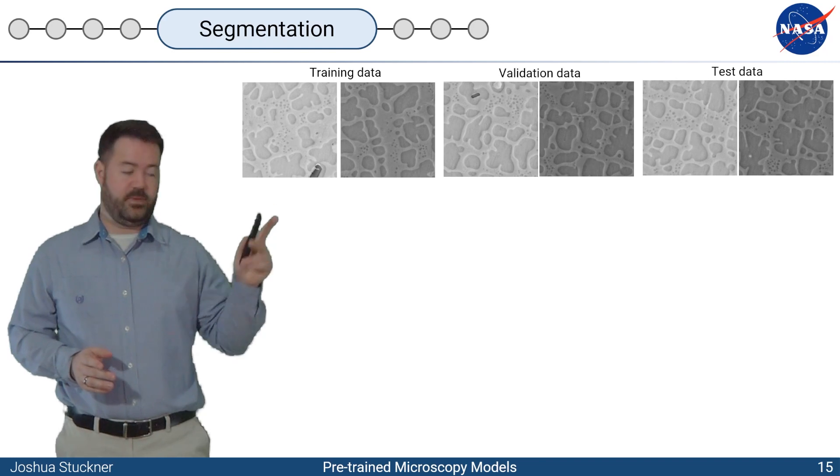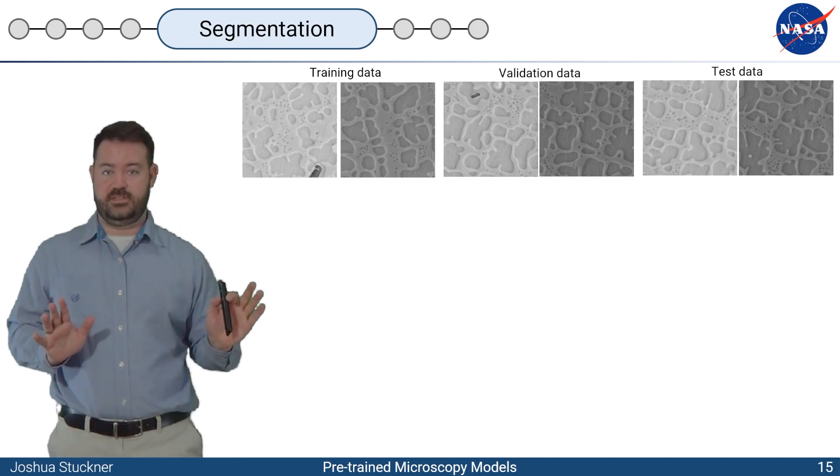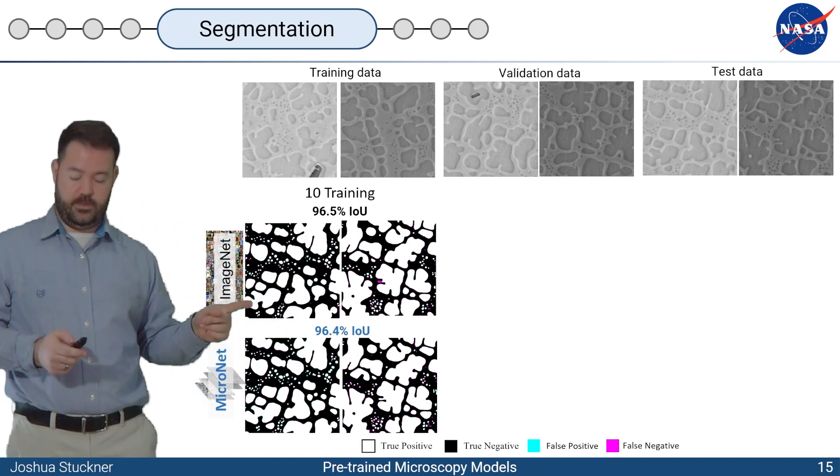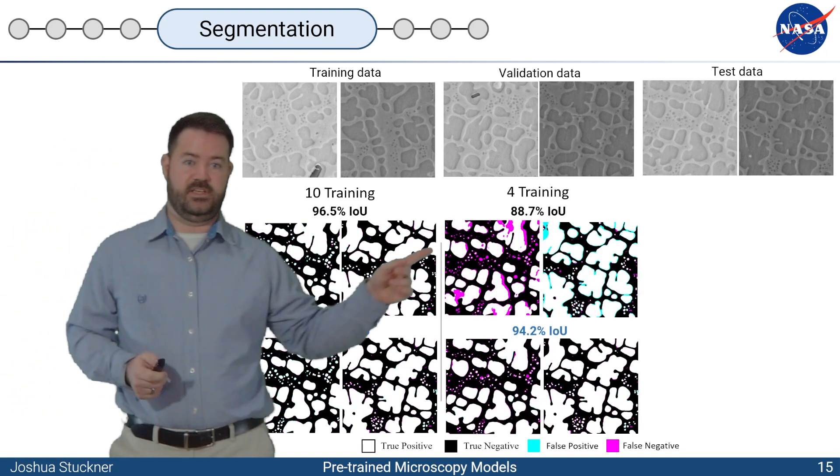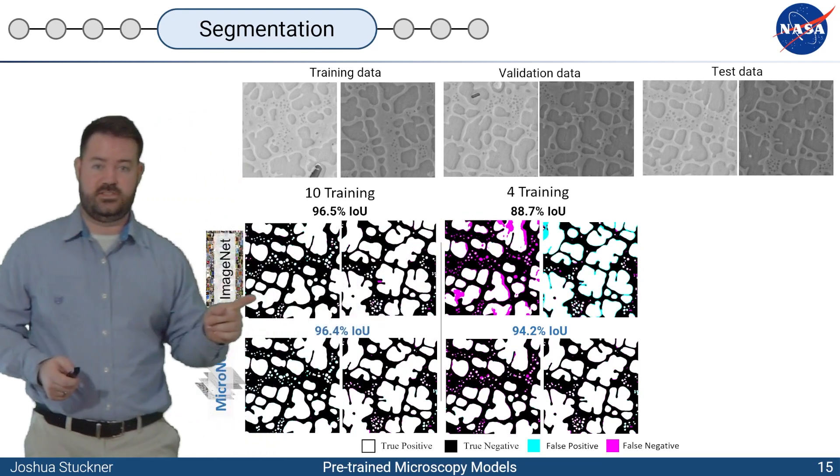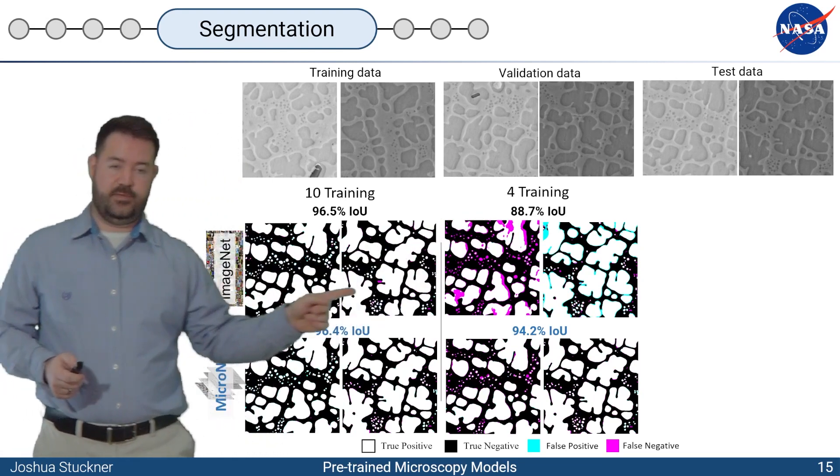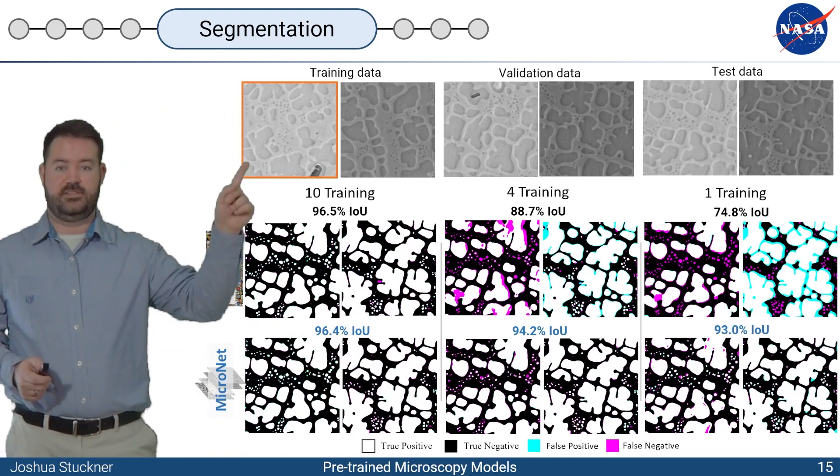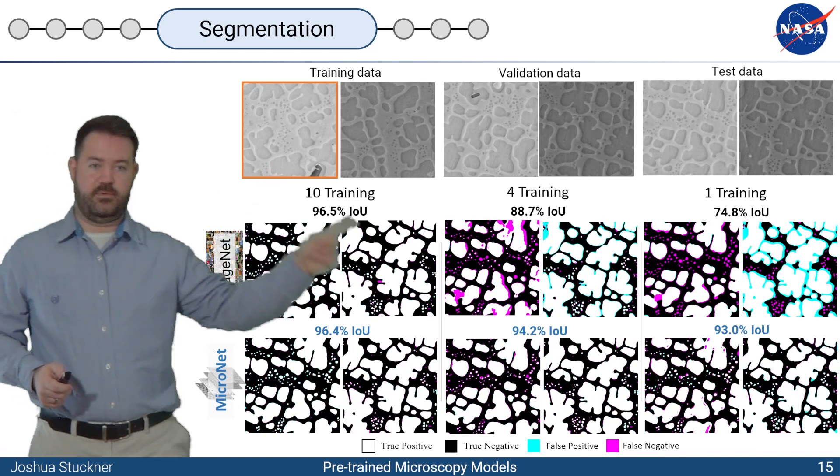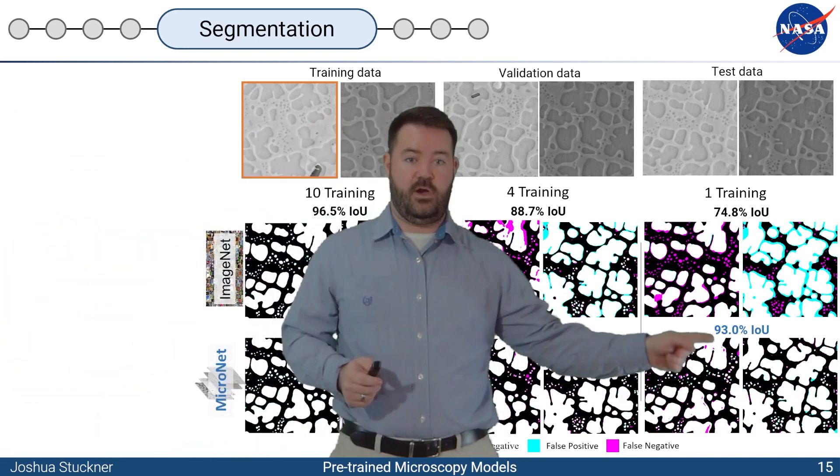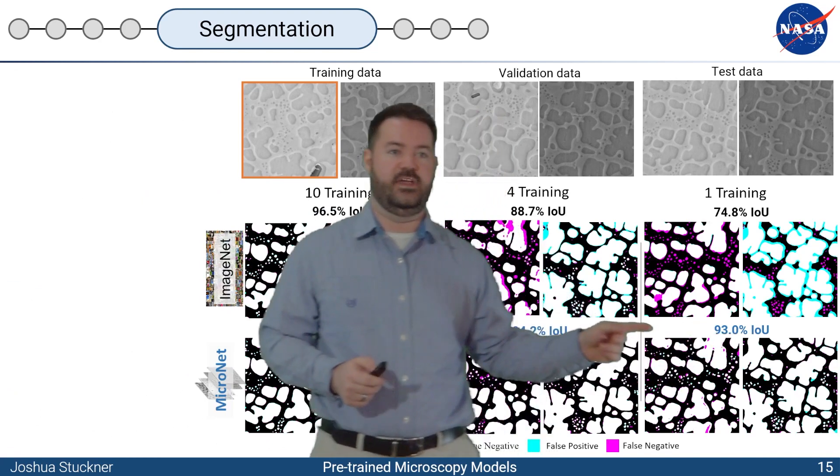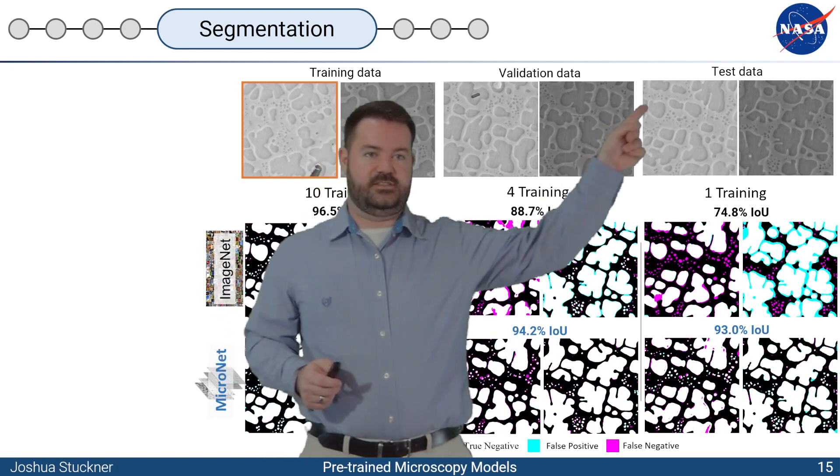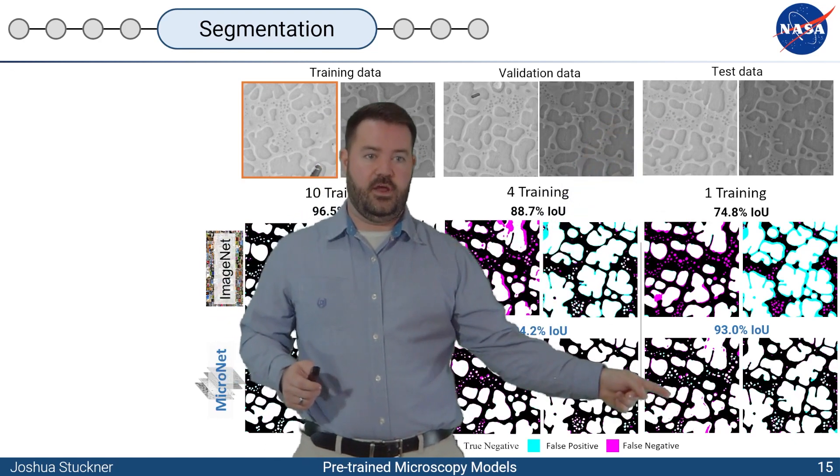This data set is the Nickel-based superalloy, and we get even better results. This is almost astonishing, really. I was surprised. When we have 10 training images, we get pretty good results. When we go down to four training images, the ImageNet data really starts to reduce. But the Micronet data stays pretty good. And then with only one training image, this one right here, we're able to segment with Micronet very well. We have hardly any reduction in accuracy, 96% to 93%. And over here, we're all the way down to 74% accuracy.